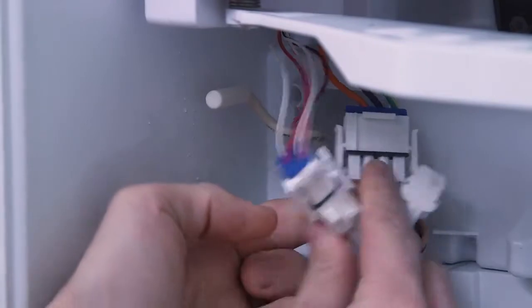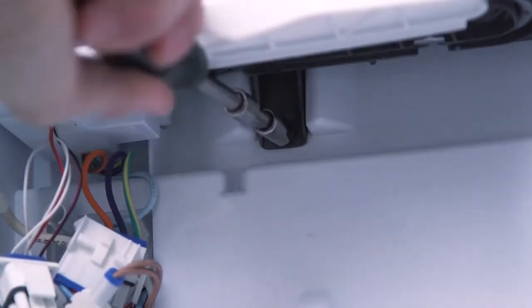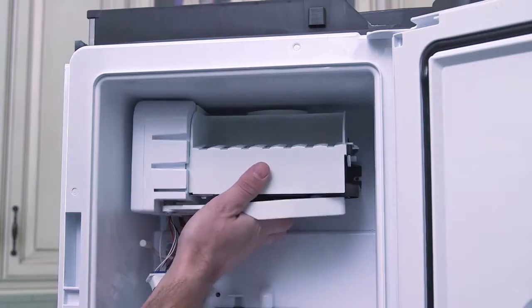Disconnect the two ice maker wire harnesses, one 4 pin and one 6 pin. Unscrew and remove the bottom center 5/16 inch hex head screw that attaches the ice maker to the ice box. Then lift and remove the ice maker.